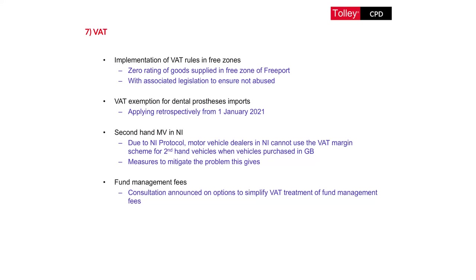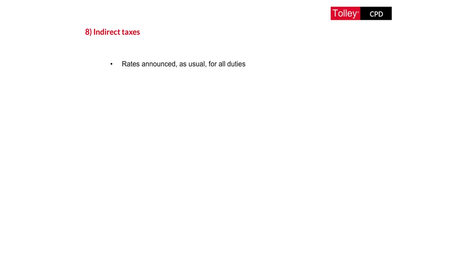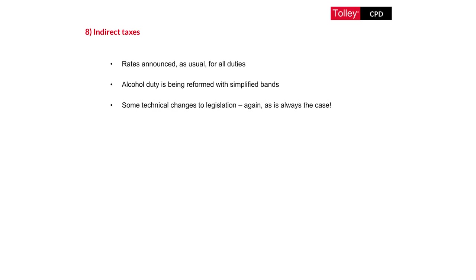There is a consultation announced on options to simplify the VAT treatment of fund management fees. Finally, there is the usual range of announcements about rates of different duties - things like landfill tax, gaming duty, vehicle excise duties for cars, vans, motorcycles, heavy goods vehicles, and tobacco duty. There was a big announcement about alcohol duty rates being overhauled and the rates being frozen, with the regime simplified so that lower alcohol will have a lower tariff and higher alcohol a higher tariff, although there was a reduction in duty applying to sparkling wines and prosecco. Technical amendments also apply to things like plastic packaging tax and insurance premium tax.